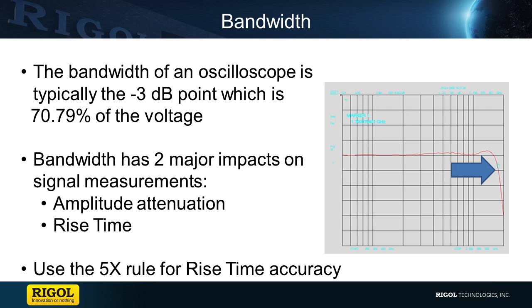Here we can see what amplitude different frequencies appear as, even though they are all the same actual amplitude. So the amplitude of the signal will vary by frequency, and this is included in the scope's specifications.